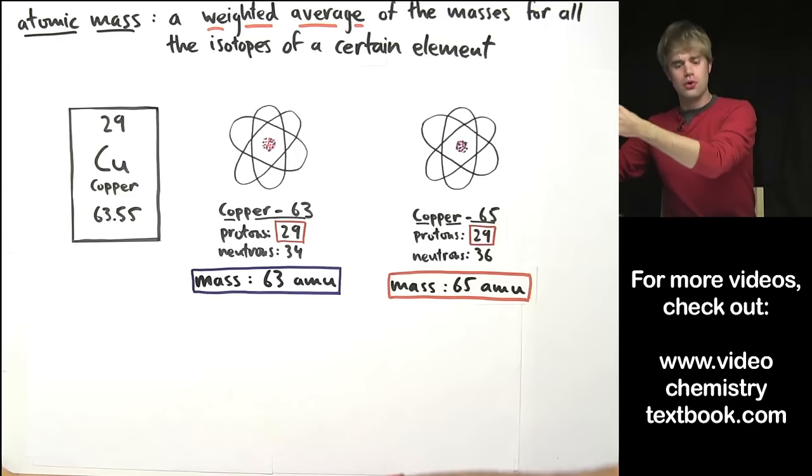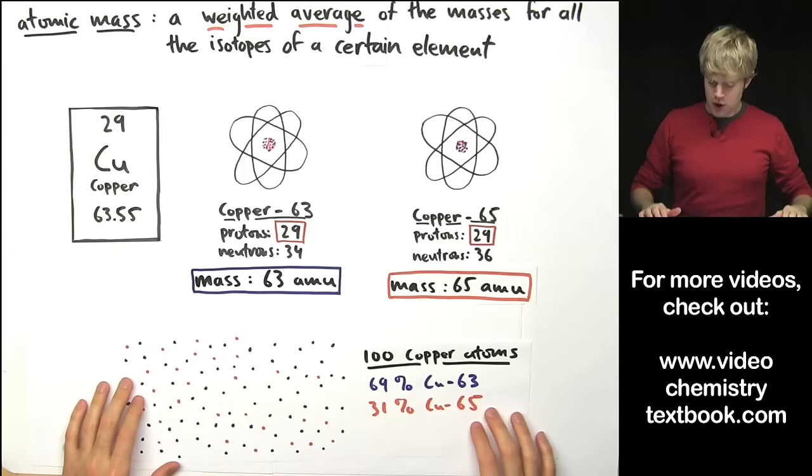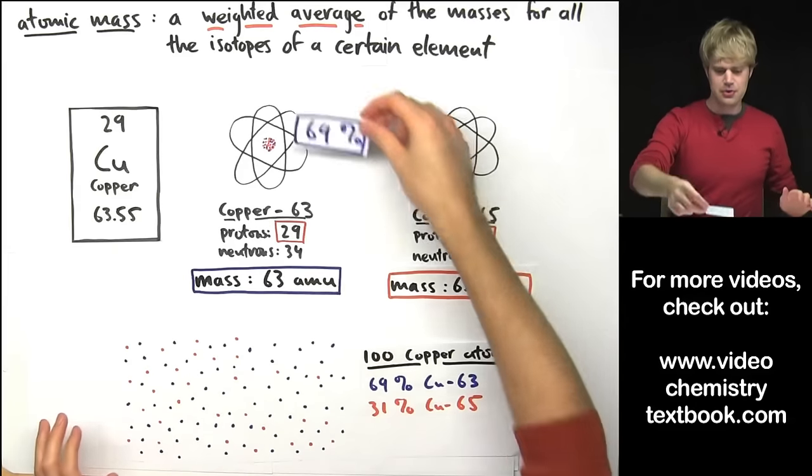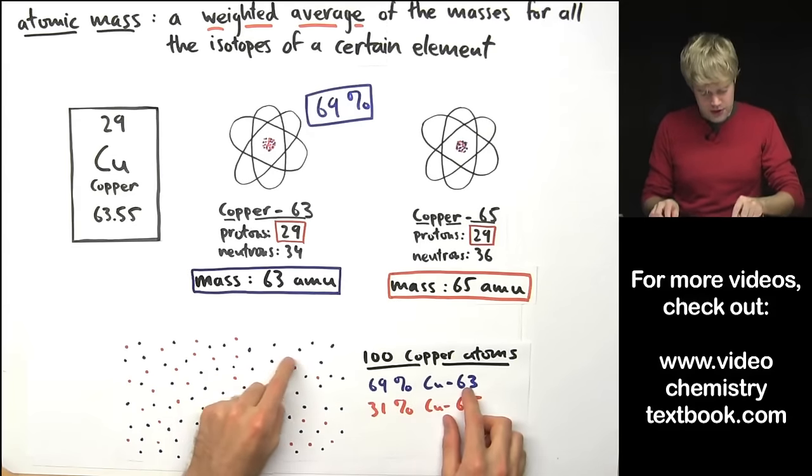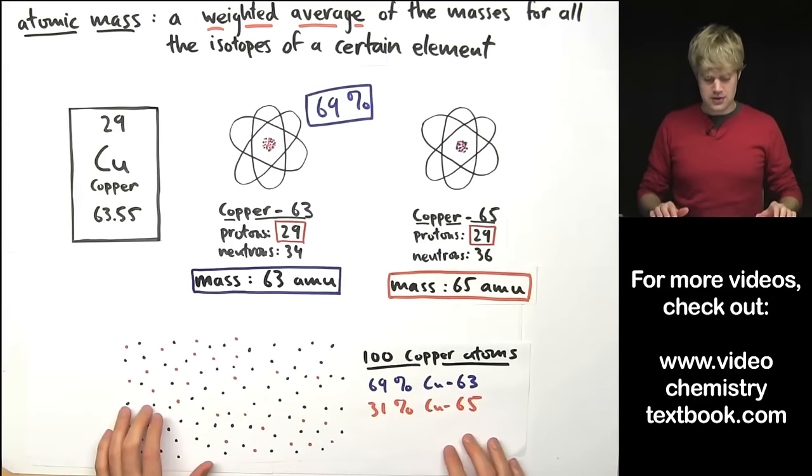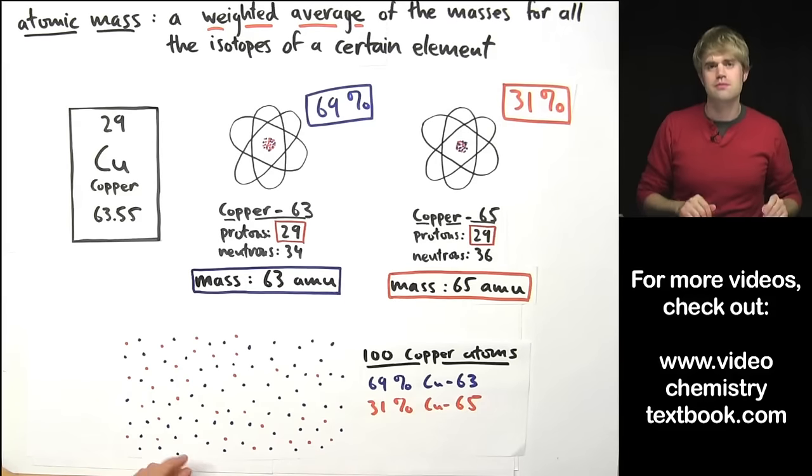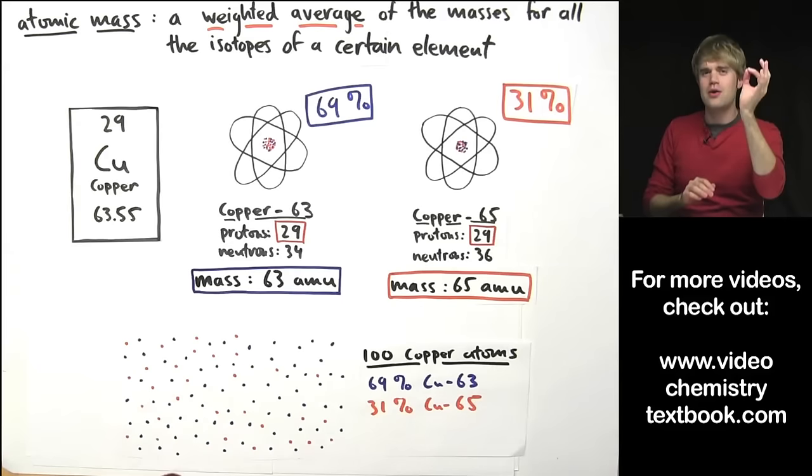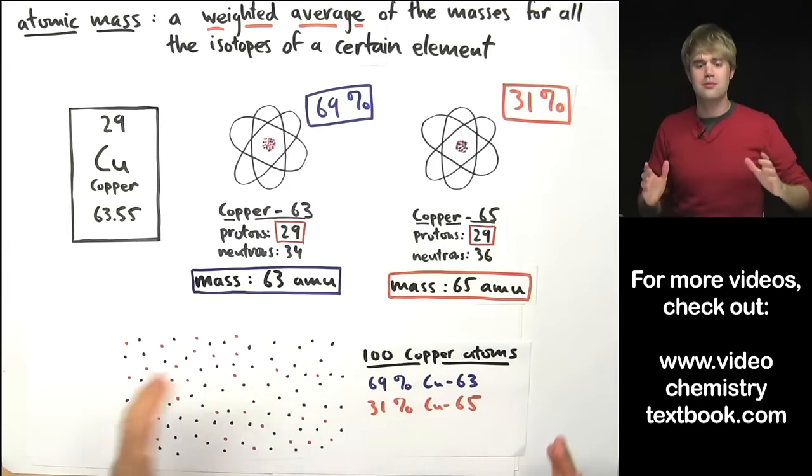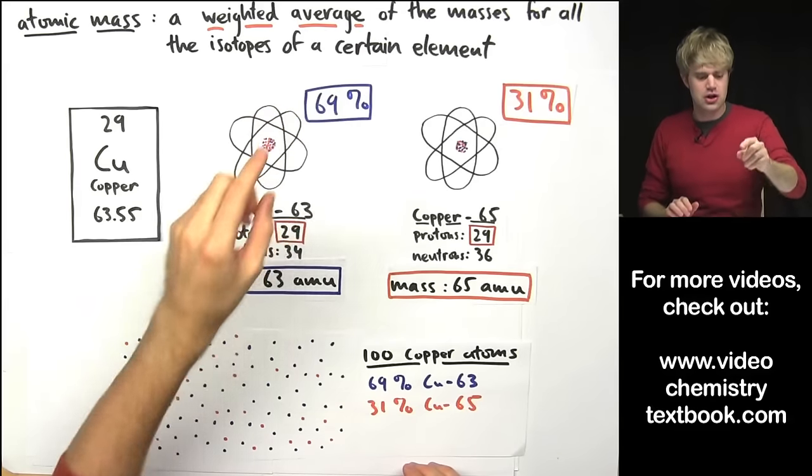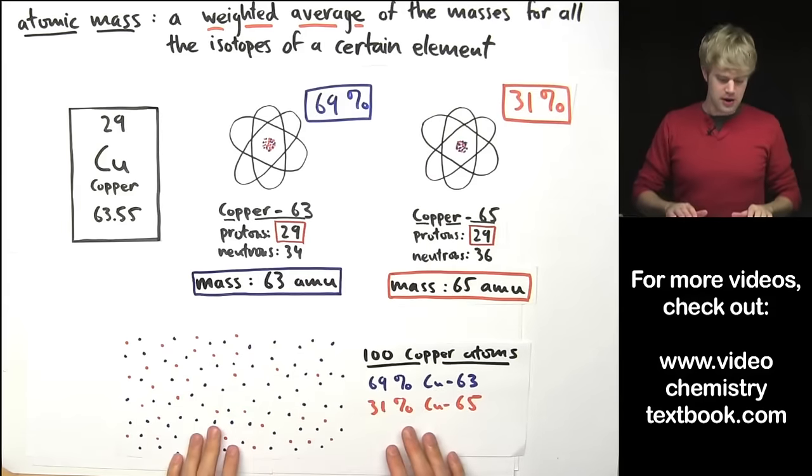If we randomly pulled 100 copper atoms out of the world, we'd find that 69% of them are copper-63. Here are my 100 copper atoms and the 63 ones are represented by blue dots. And we'd find that 31% of those are copper-65 atoms. So the point is you pull a copper atom at random from somewhere in the world and it can be either 63 or it can be 65. You have a 69% chance of getting copper-63 and a 31% chance of getting copper-65.